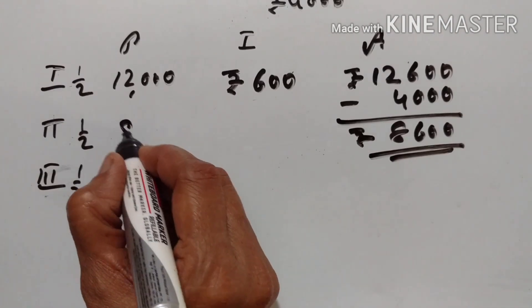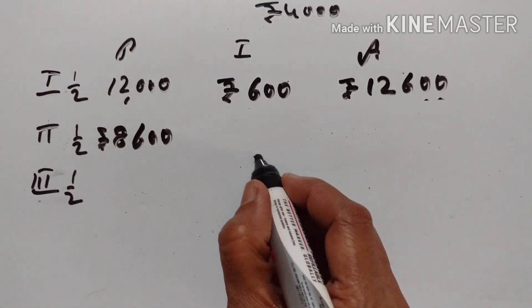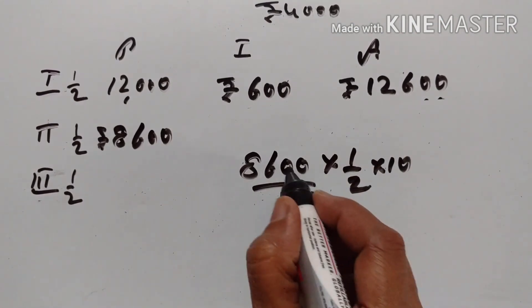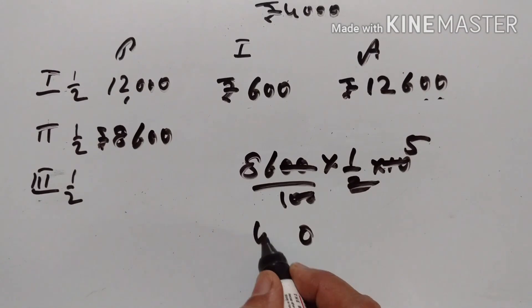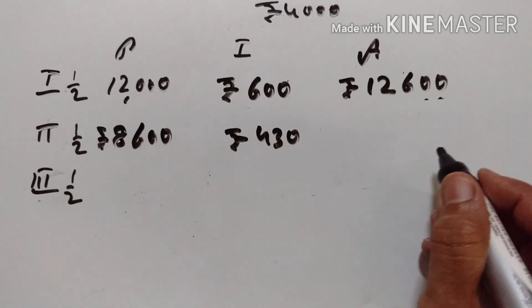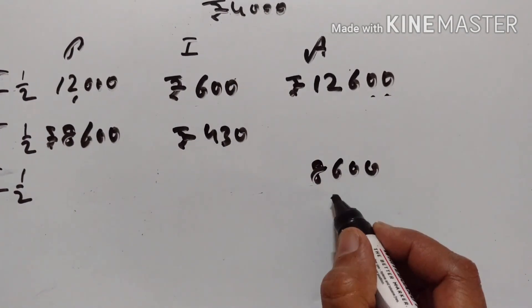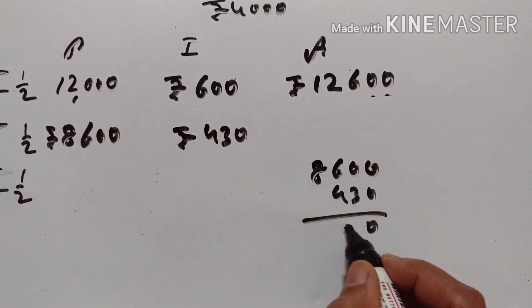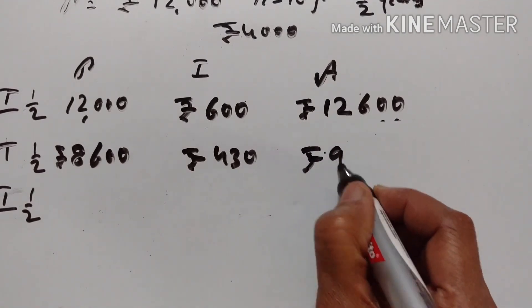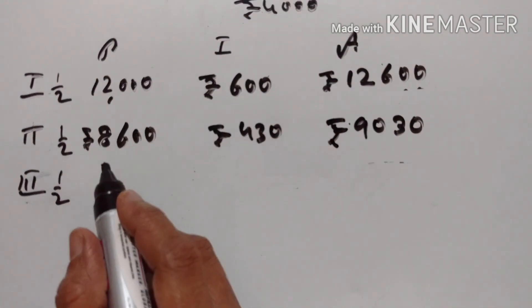Rs. 8,600 becomes the new principal. The interest is equal to 8600 times 10 divided by 100, which is Rs. 430. Interest for the second half: Rs. 8,600 plus Rs. 430 is Rs. 9,030. This is the amount at the end of 12 months.